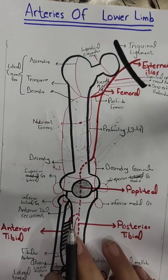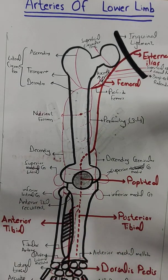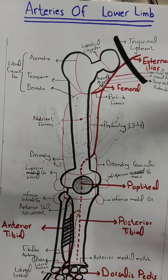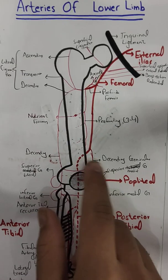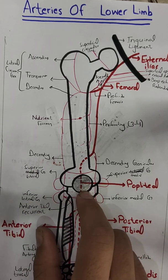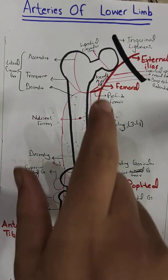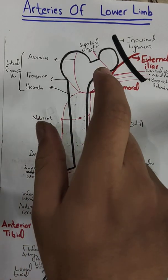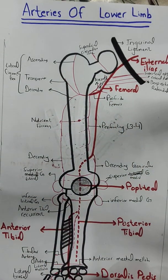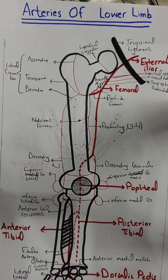This covers the arteries of the lower limb along with their main branches. A separate video will cover the anastomoses: in total there are three anastomoses in the lower limb — the genicular anastomosis around the knee joint, the cruciate anastomosis, and the trochanteric anastomosis. Thank you.